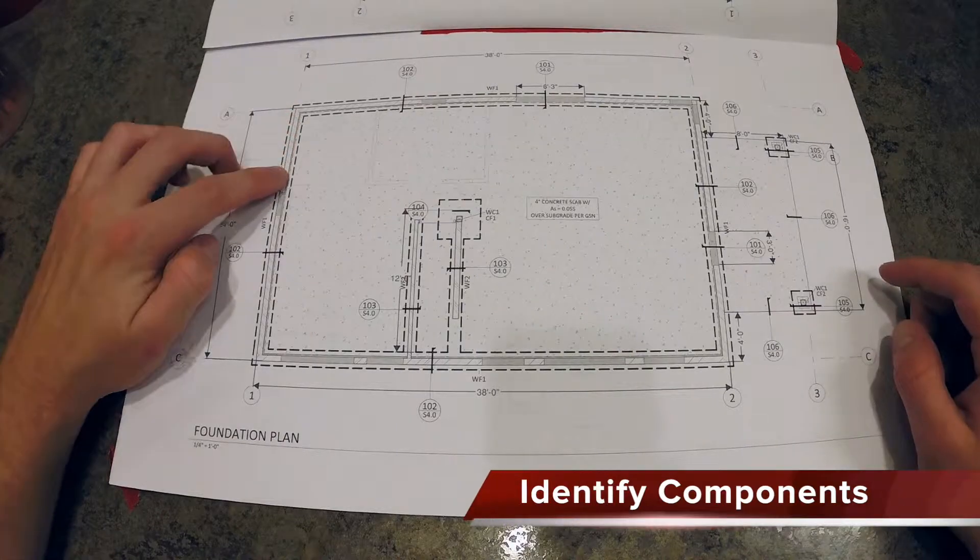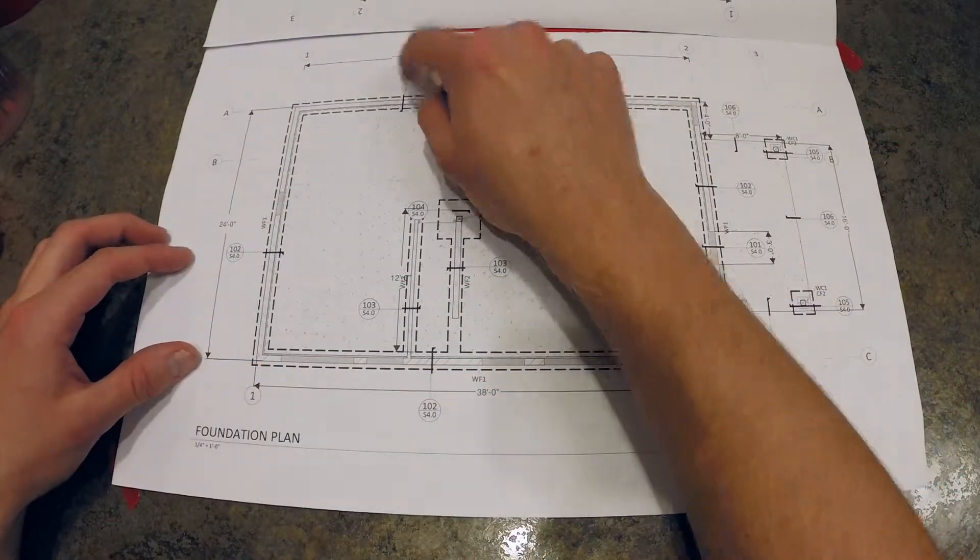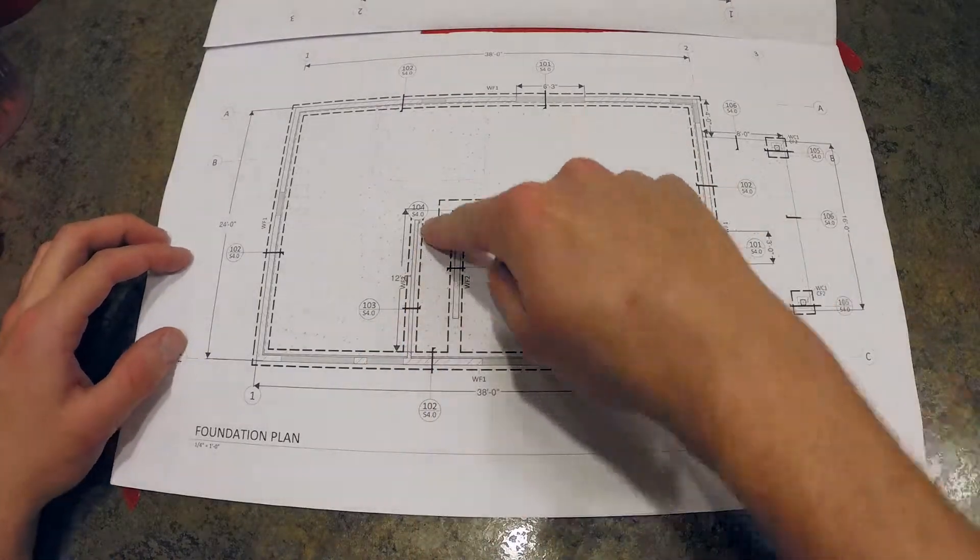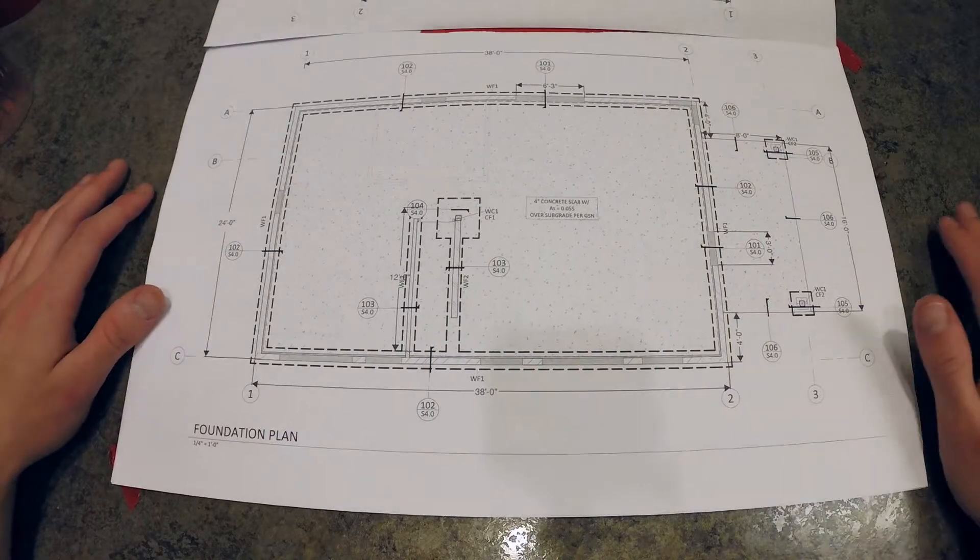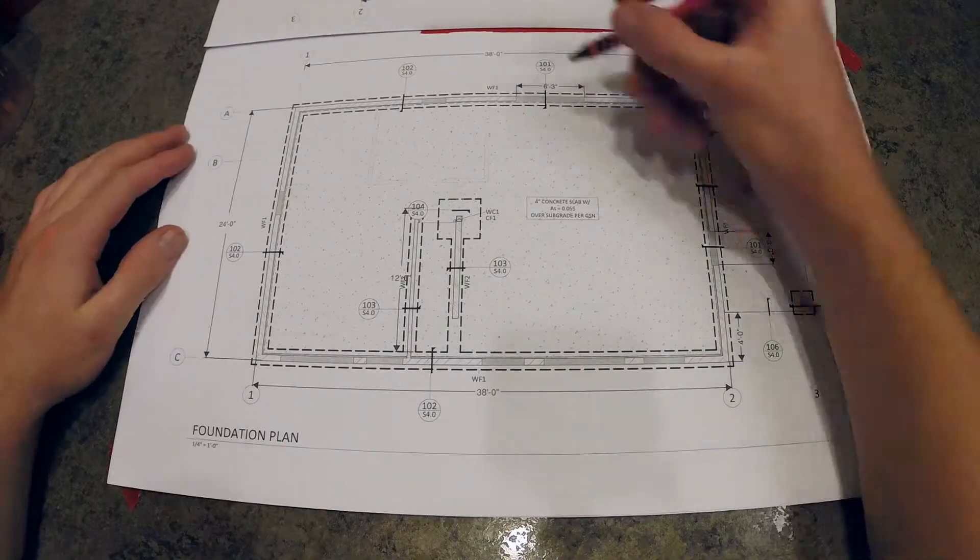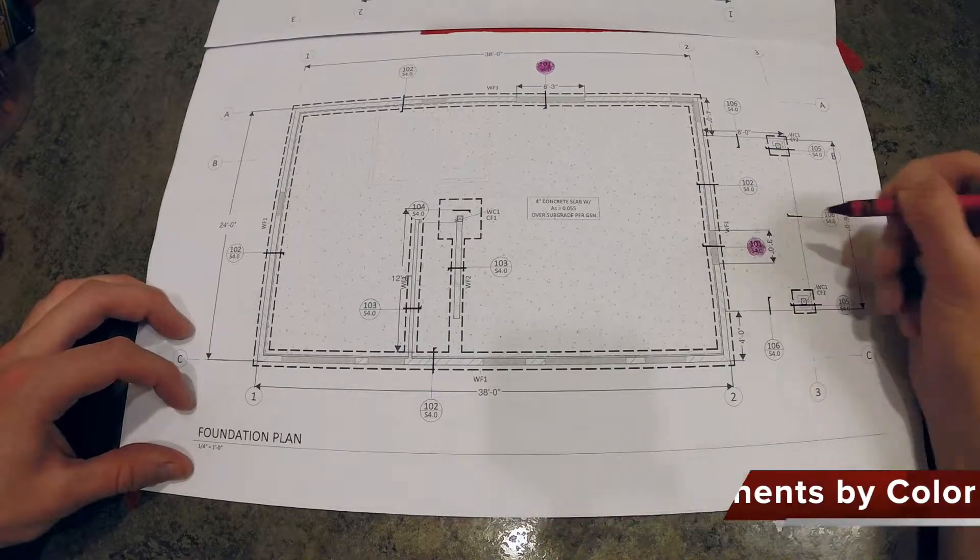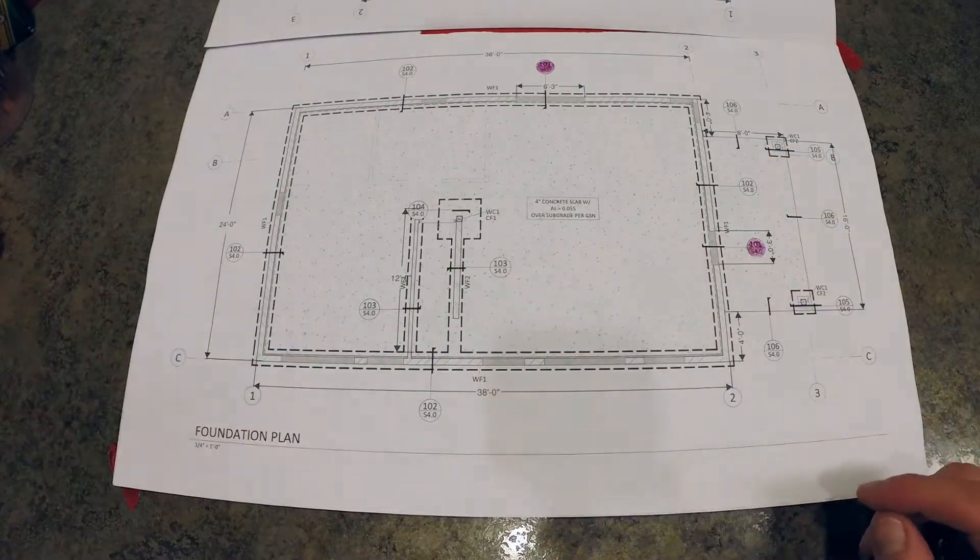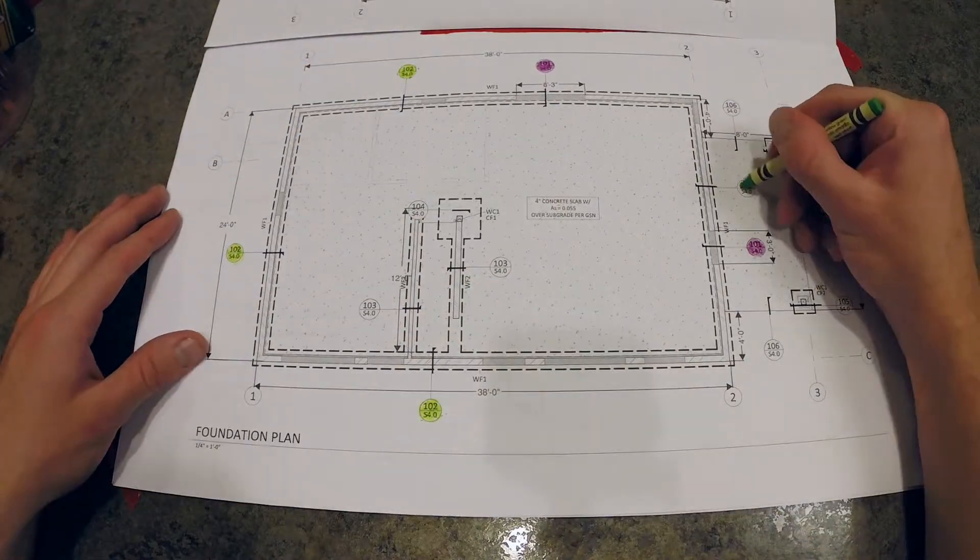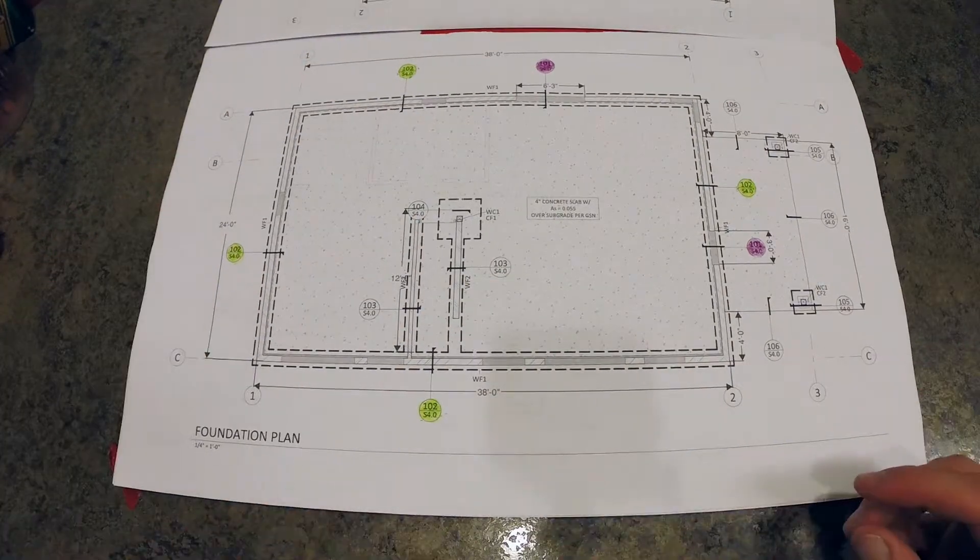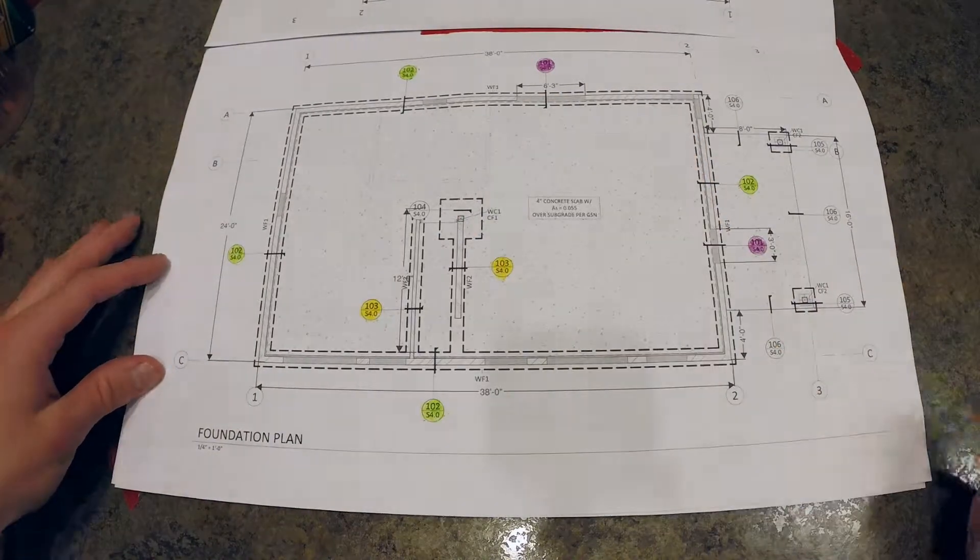First thing we're going to do is look at our plan view and see what we've got to identify. We've got some footings around the perimeter, a few different call-outs for footing types, some post columns, and the overall slab. So we're going to start colorizing our call-outs by type so we can identify all the different types of footings in this plan. This is going to help us later when we're figuring out quantities for how many linear feet of which type we got.